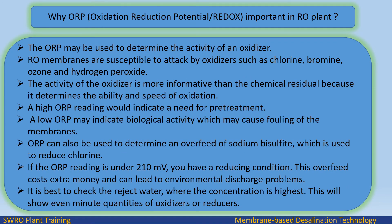Why is Oxidation Reduction Potential important in an RO plant? The ORP may be used to determine the activity of an oxidizer. RO membranes are susceptible to attack by oxidizers such as chlorine, bromine, ozone, and hydrogen peroxide. The activity of the oxidizer is more informative than the chemical residual because it determines the ability and speed of oxidation. A high ORP reading would indicate a need for pretreatment.